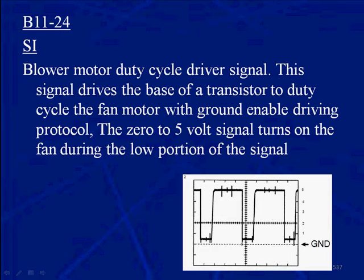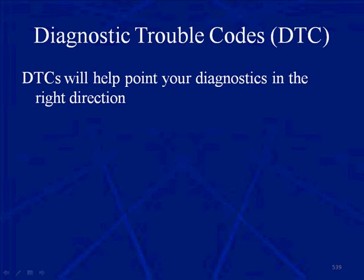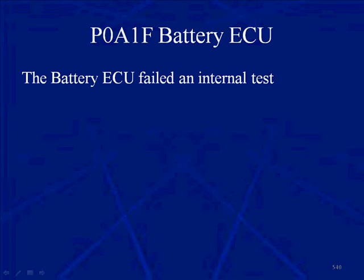You can also use a DVOM if it can measure duty cycle. B1210 is the VBB3 circuit — battery voltage block 3. Remember, blocks are numbered 1 through 14. At a typical state of charge of 60%, that block voltage should be 14.9 to 15.2 volts. You can also use diagnostic trouble codes to point you in the direction of your diagnostics. A P0A1F is a battery ECU code.